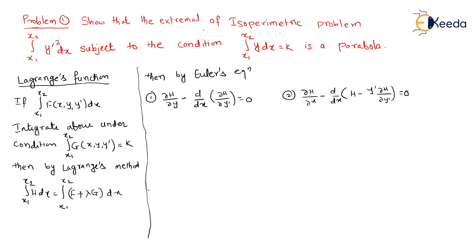So here, the extremal function is given — that is y-dash squared. Along with that, there is a condition given. What used to be done in the previous type is only the function is given and we need to find its extremal. But here onwards, in this particular type — that is the isoperimetric problem — the extremal function is given along with the constraint.